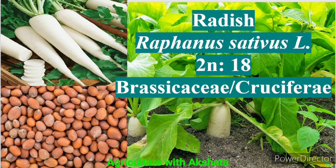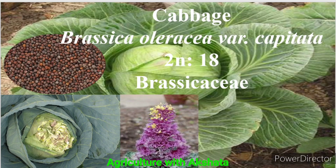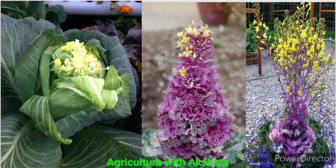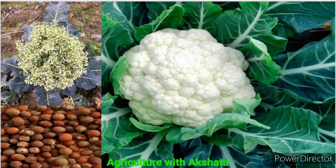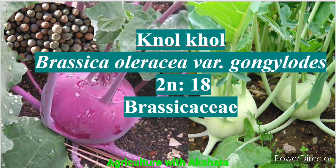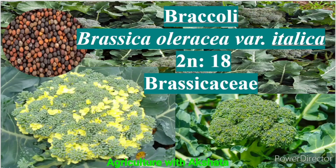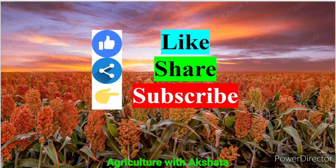Radish: Raphanus sativus, 2n = 18, Brassicaceae or Cruciferae family. Cabbage: Brassica oleracea var. capitata, 2n = 18, Brassicaceae family. Cauliflower: Brassica oleracea var. botrytis, 2n = 18, Brassicaceae family. Kohlrabi: Brassica oleracea var. gongylodes, 2n = 18, Brassicaceae family. Broccoli: Brassica oleracea var. italica, 2n = 18, Brassicaceae family. These are all some of the most important agricultural crops.